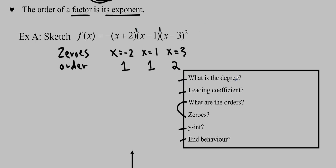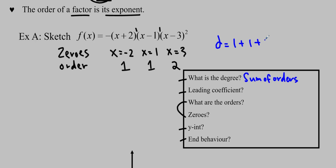Using the orders, we can figure out what the degree is. You could expand the whole thing, but that would take quite a while, especially for a really big polynomial. What we can do instead is find the sum of the orders, and that will give us the degree. In this case, it's 1 plus 1 plus 2, so the degree is 4.